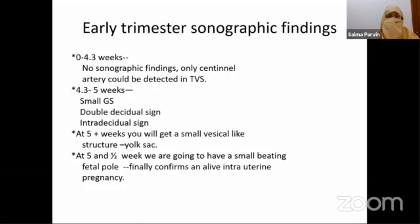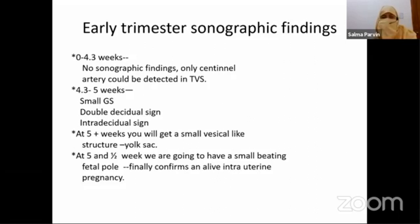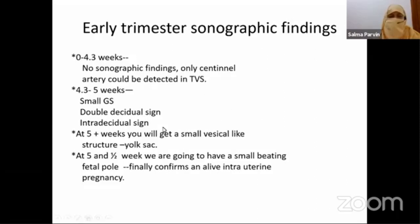From four weeks three days to five weeks, you may see a small gestational sac, a double decidual sign, and an intradecidual sign. At five weeks plus, you will get a small vesicle-like structure called the yolk sac. At five and a half weeks on TVS, you will finally get a small beating fetal pole — representing life in the gestational sac. So there will be nothing up to four weeks three days; then a small gestational sac and double decidual sign; then a yolk sac at five weeks; then a live intrauterine pregnancy at five and a half weeks on TVS.